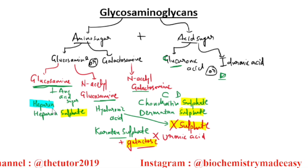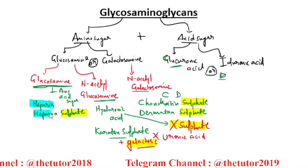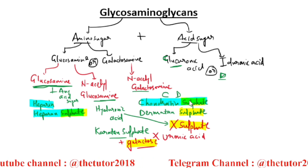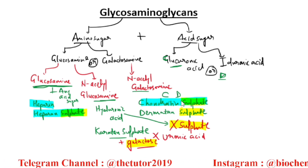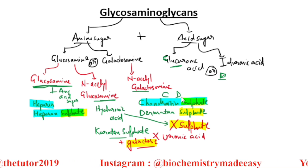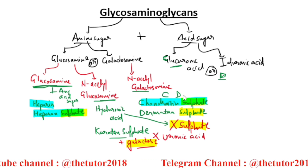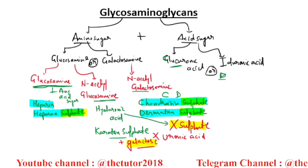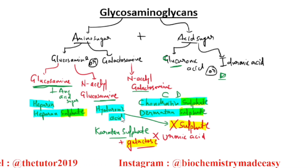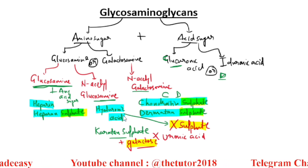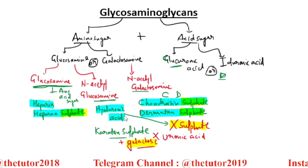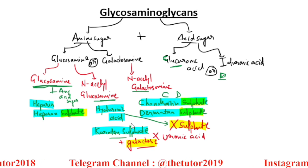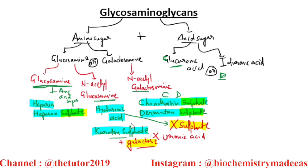Heparin is an anticoagulant. Heparan sulfate is found in the glomerular basement membrane. Chondroitin sulfate is the most abundant glycosaminoglycan in the body — found in cartilage, tendons, ligaments, and aorta; in cartilage it binds collagen and holds fibers in a tight, strong network. Dermatan sulfate is found in skin, blood vessels, and heart valves. Hyaluronic acid is present in synovial fluid of joints and vitreous humor of the eye, serving as a lubricant and shock absorber. Keratan sulfate is found in cornea and tendons; defective sulfation of keratan sulfate causes macular corneal dystrophy.